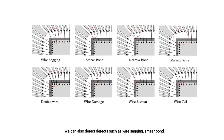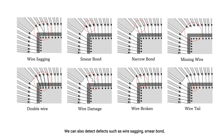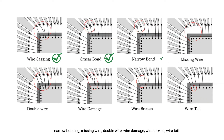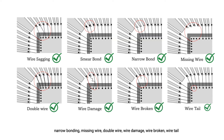We can also detect defects such as wire sagging, smear bond, narrow bonding, missing wire, double wire, wire damage, wire broken, and wire tail.